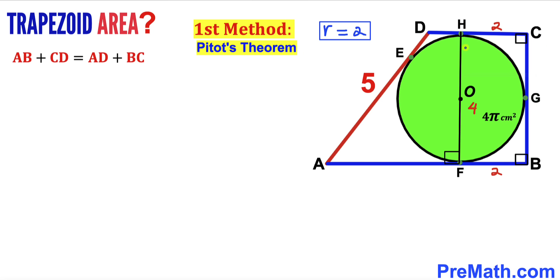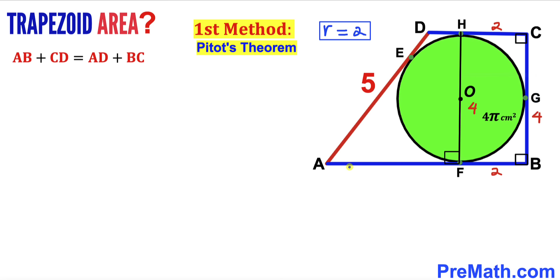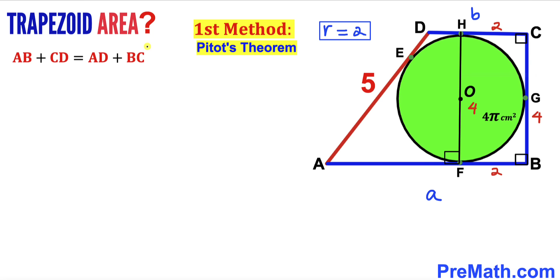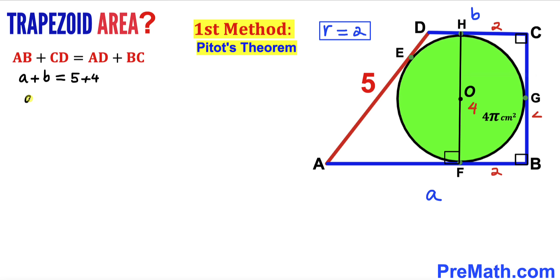Pittot's theorem states that in a tangential quadrilateral, the sum of the two opposite sides are always equal: AB + CD = AD + BC. We can see that diameter FH equals side BC, so BC = 4. Let lowercase a represent AB and lowercase b represent CD. Filling in the formula: a + b = AD + BC = 5 + 4 = 9.